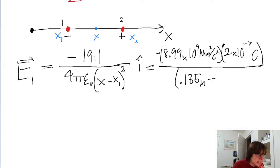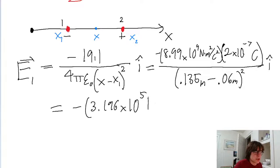Minus x1's position, which is given as 6 centimeters. So that would be 0.06 meters. This difference is squared, and there's the i hat unit vector. So putting all of this into a calculator, we find negative 3.196 times 10 to the power of 5 newtons per coulomb. All of this with the i hat unit vector.